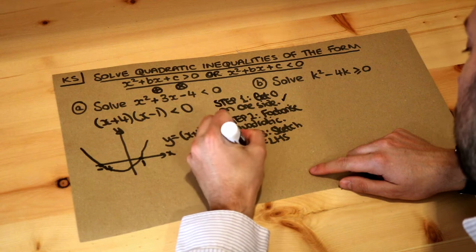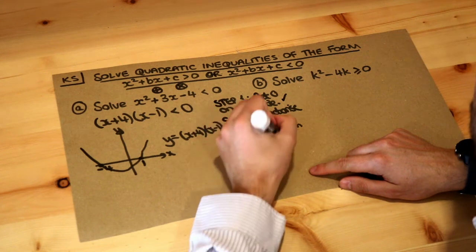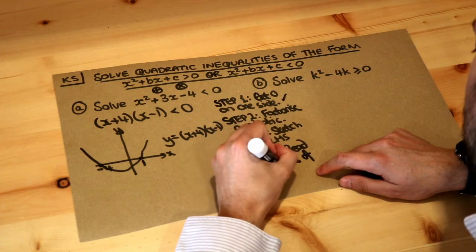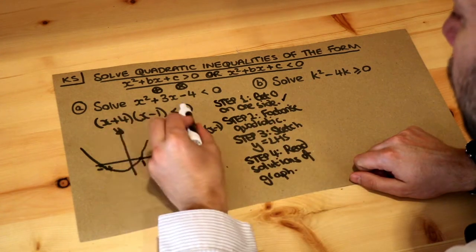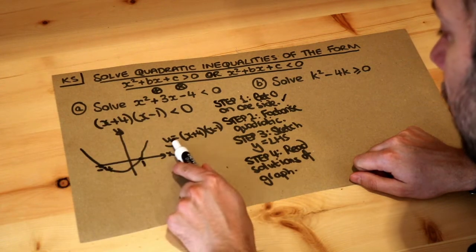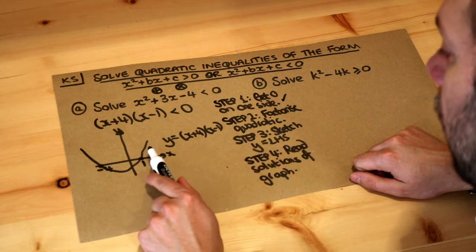And then the final step is to read your graph to get your solutions. Now this is a complicated bit and people get very confused by this. Let's look at what we're solving. We're saying this thing here, the y value is less than zero.